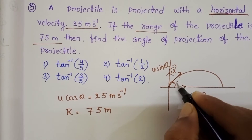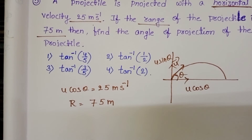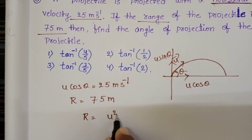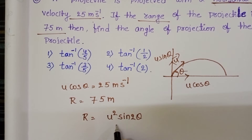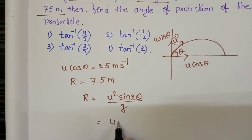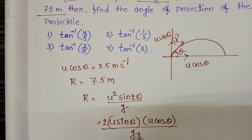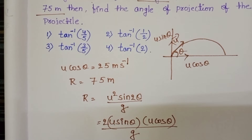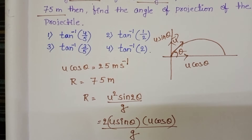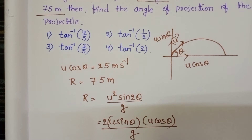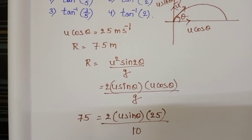We want the angle of projection, so we use the range formula: R = u² sin 2θ / g, which expands to u sin θ × u cos θ × 2 / g. Substituting range = 75 meters, u cos θ = 25, and g = 10.